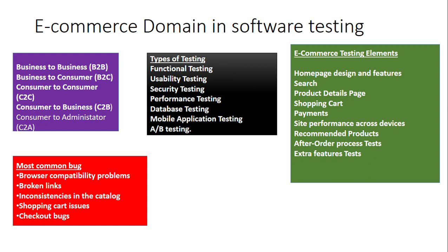Third is Consumer to Consumer, or C2C. In this model, one consumer directly interacts with another consumer — they can buy or sell products with each other using an online platform. For example, on OLX or Quikr, I can sell my product to another consumer through a third-party website. Other examples of C2C platforms are 99acres and MagicBricks.